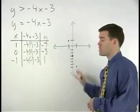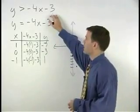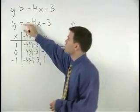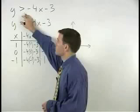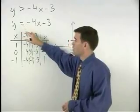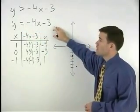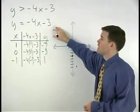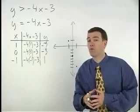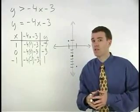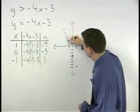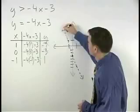Before graphing a line through these points, however, let's take a look back at the original inequality. Notice that y is greater than negative 4x minus 3. So the line y equals negative 4x minus 3 is not a part of the solution set. However, it does form a boundary on the graph. So to represent this idea, we draw a dotted line through our points.